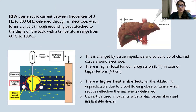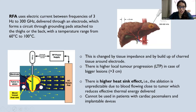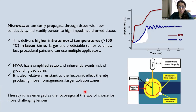RFA uses electric current between frequencies of 300 MHz delivered through an electrode which forms a circuit through grounding pads attached to the thighs or back of the patient, with a temperature range from 60 to 100 degrees Celsius. However, this is affected by tissue impedance and build-up of charred tissue around the electrode. There is higher local tumor progression with bigger lesions and a higher heat sink effect — ablation is unpredictable due to blood flowing close to the tumor, which reduces effective thermal energy delivered — and it cannot be used in patients with cardiac devices.